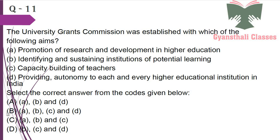The University Grants Commission was established with which of the following aims? Promotion of research and development in higher education — yes; identifying and sustaining institutions of potential learning — yes; capacity building of teachers — yes; providing autonomy to each and every higher educational institution in India — no, this is not a function of UGC. So the answer is A, B and C only.